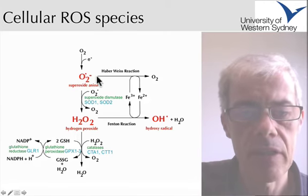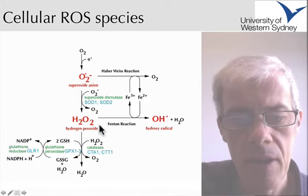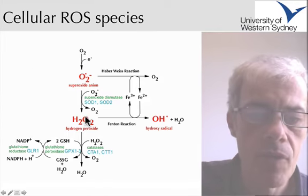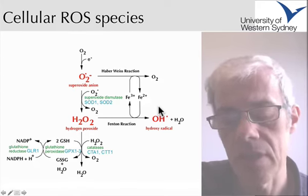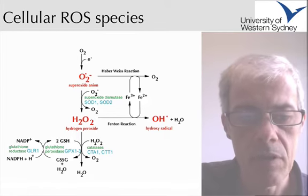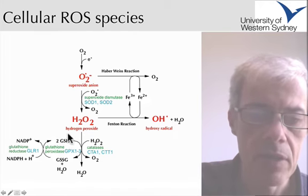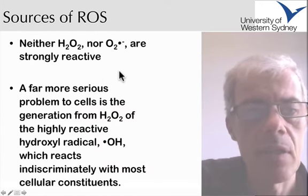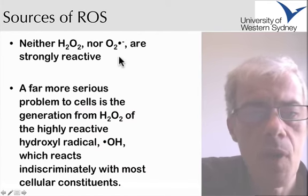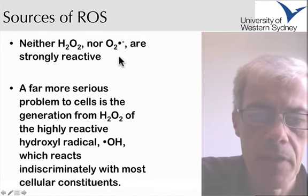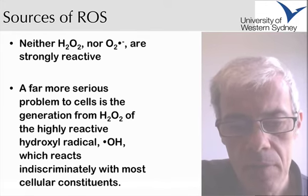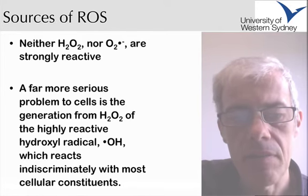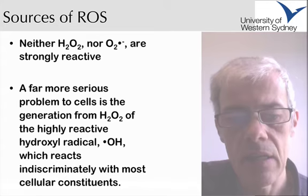There are also other reactions that can occur in the cell, but the important thing here is that hydrogen peroxide can be converted into a more dangerous free radical, which can then damage proteins, lipids, and DNA. The body has a mechanism to convert hydrogen peroxide into water, involving glutathione. Hydrogen peroxide and superoxide per se are not particularly reactive within the cell; a far more serious problem is the conversion of hydrogen peroxide to the hydroxyl radical, since the hydroxyl radical is very reactive and has the ability to interact with and damage many cellular constituents.